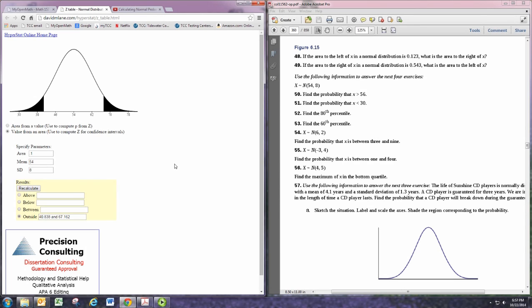So, you see that we can specify a mean and standard deviation, and then either provide an area—above, below, between, or outside—or values of the random variable—above, below, between, or outside—and we can have the calculator tell us the unknown.